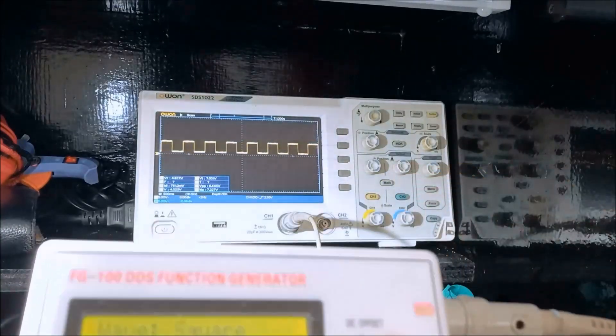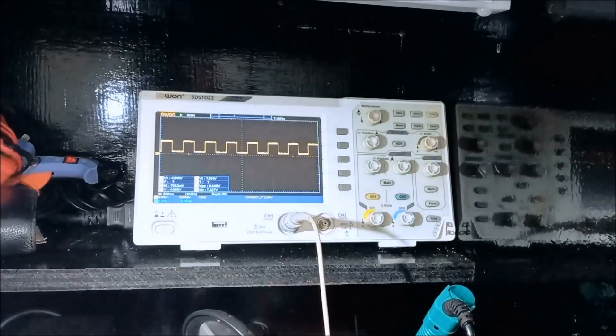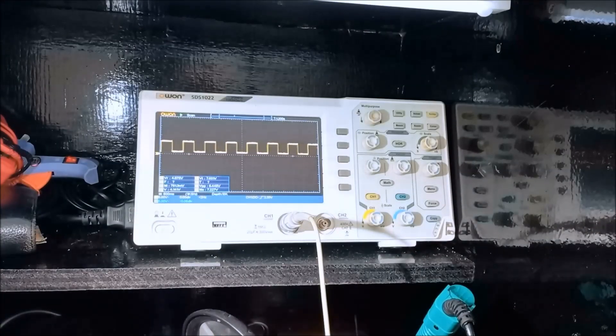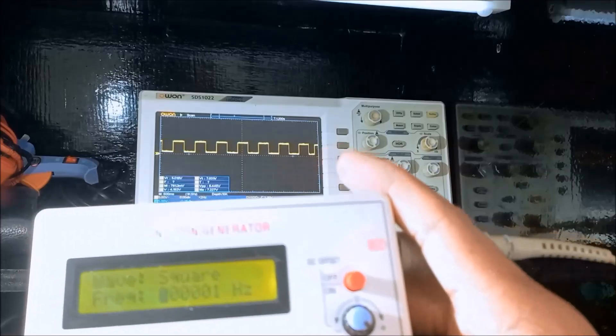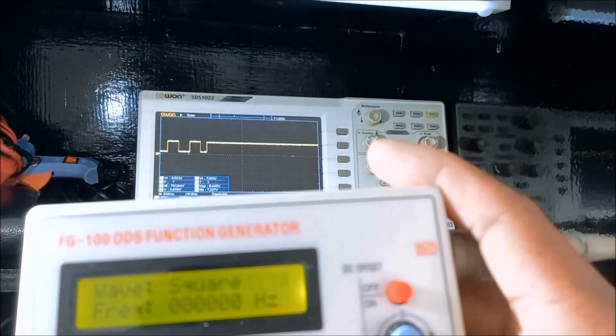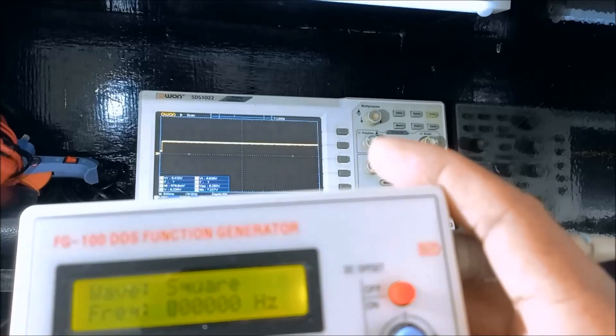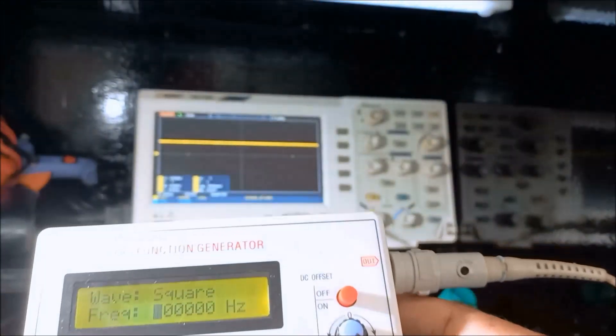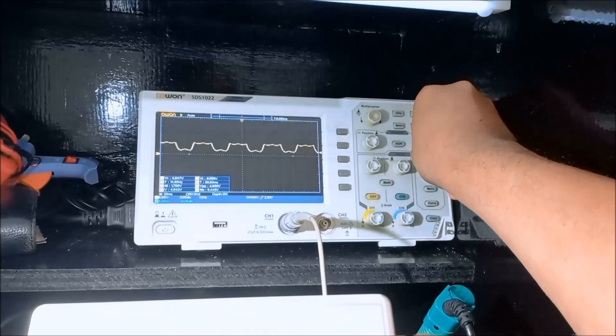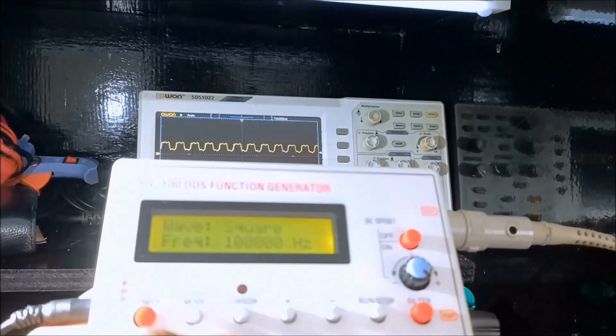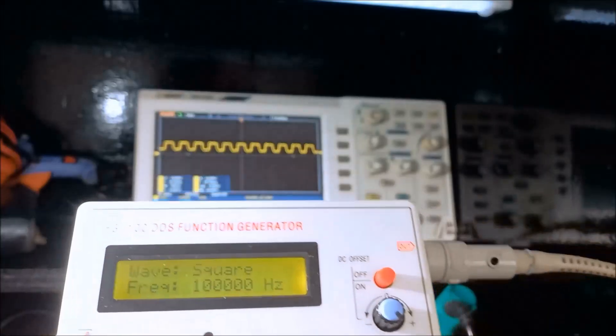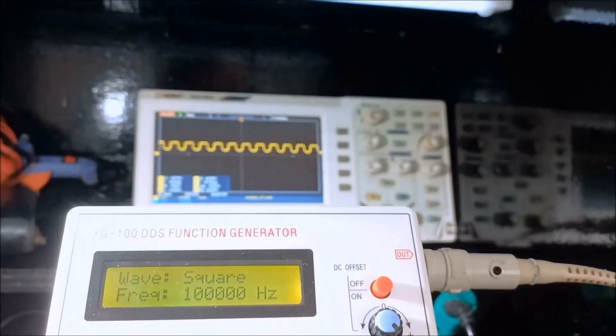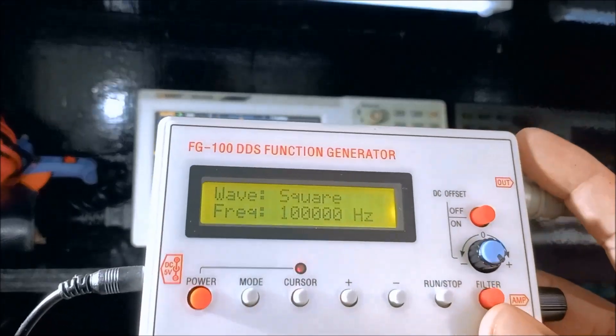About 100 kilohertz. Let us set that to 100 kilohertz. Run. The more, the higher the frequency, there is a distortion of the waveform, square waveform.